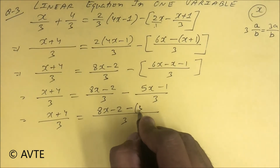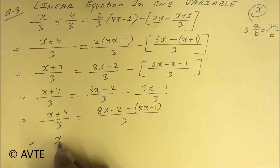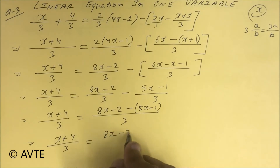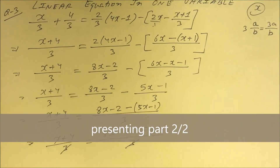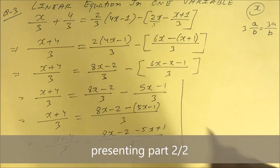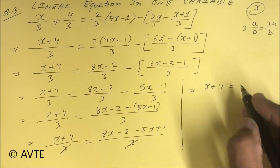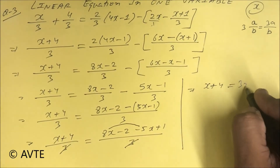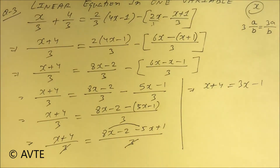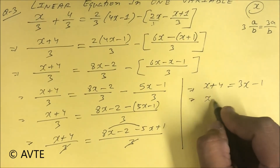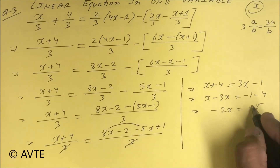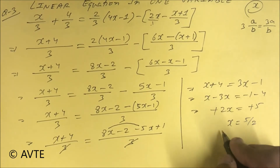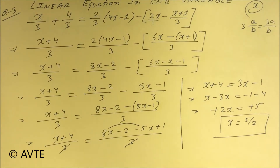Minus of 5x minus one. So x plus four upon three equals 8x minus two minus 5x plus one upon three. The threes cancel, so x plus four equals 3x minus 5. This gives minus 2x equals minus 9, and x is equal to 5 upon 2. Be careful about these questions — I hope you understood.